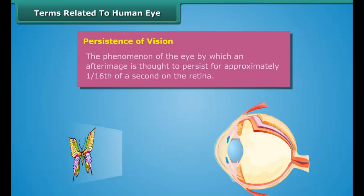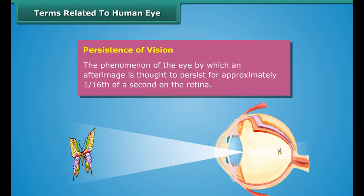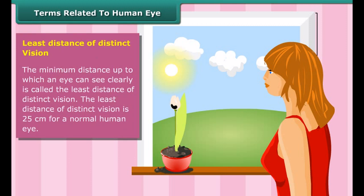Retina is a light sensitive tissue. Persistence of vision is the phenomenon of the eye by which an after-image is thought to persist for approximately 1/16th of a second on the retina.